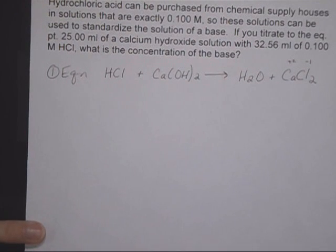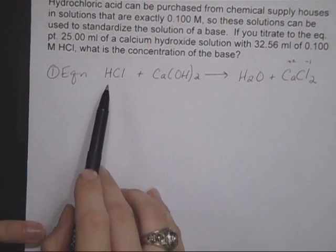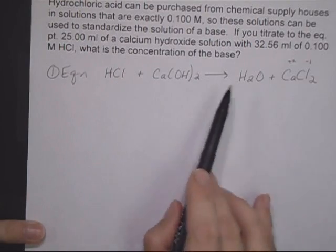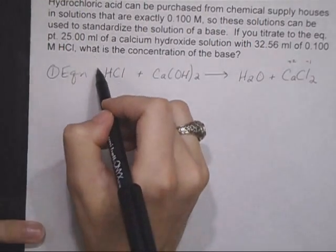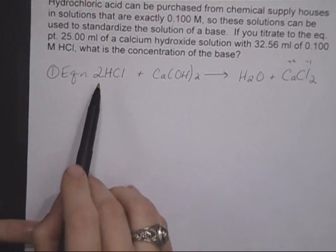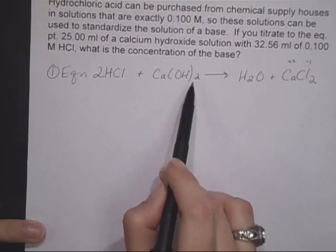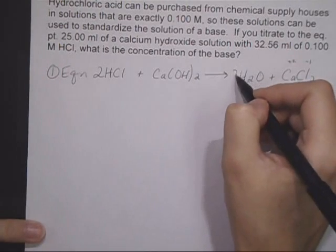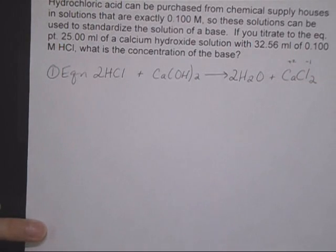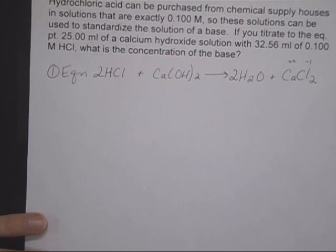Now we need to balance this equation. We've got two CLs over here, but only one on the left, so I'm going to put two in front of that, which is going to give me two and then two here, so four H's. So I need to put a two in front of the water, and then it's balanced.